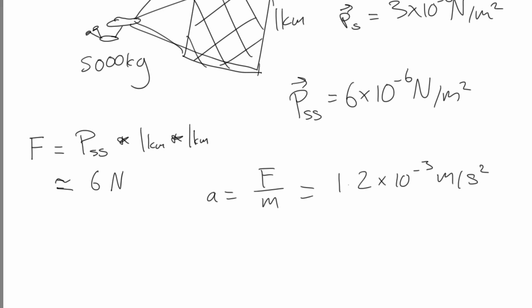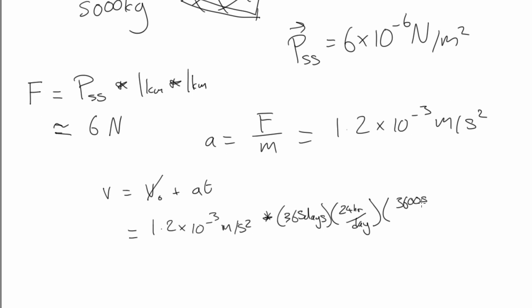That's the acceleration, and now we get to use Newton's second law. The velocity is equal to the velocity that you started with plus the acceleration over time. We're going to assume we started from zero velocity and we're going to go for about a year. From that, we get this.